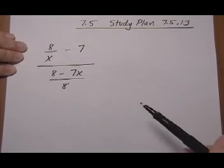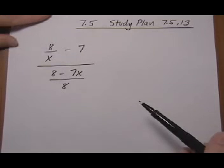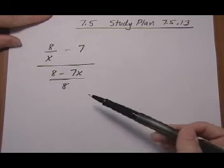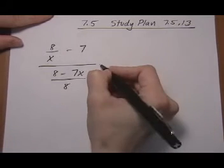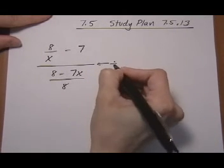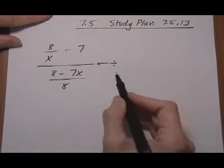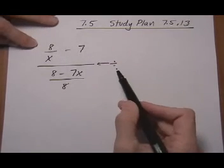There are two different methods to handle it. We can either multiply the top and bottom by LCDs, or we can turn this division problem into multiply by the reciprocal. I'm going to use the multiply by reciprocal method. Just let me know if you want to see a different method.